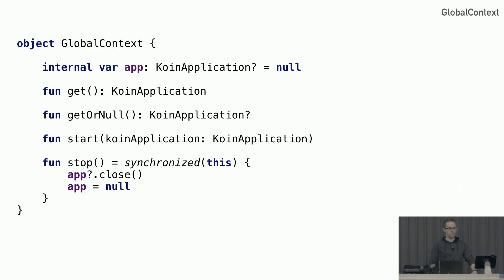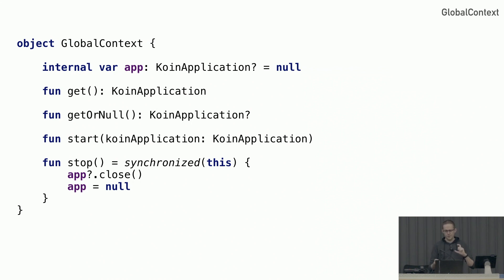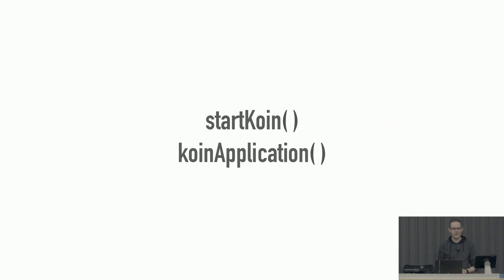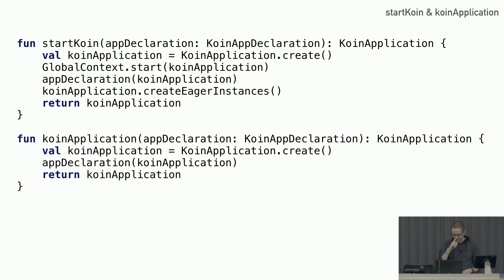There's another thing called GlobalContext, which holds a var for the KoinApplication — the global instance you might want — with convenience methods for getting, accessing, starting, and stopping it. This allows us to have a global context. But it also allows us to have other instances of Koin, because Koin itself is not a singleton and KoinApplication is not a singleton. So you can create multiple dependency graphs that exist in your app at the same time, which is really useful for very specific edge cases of handling wildly different scopes without a lot of refactoring.